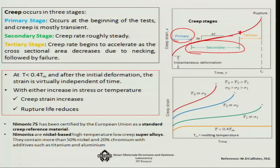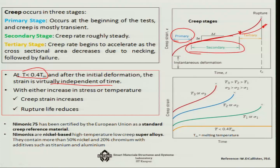As seen in the plot, beyond a particular time, the creep increases exponentially in the tertiary stage, which actually leads toward failure. At temperatures less than 0.4 times the melting point temperature, after initial deformation the strain is virtually independent of time. But with an increase in stress or temperature, the creep strain increases and the rupture life decreases rapidly.